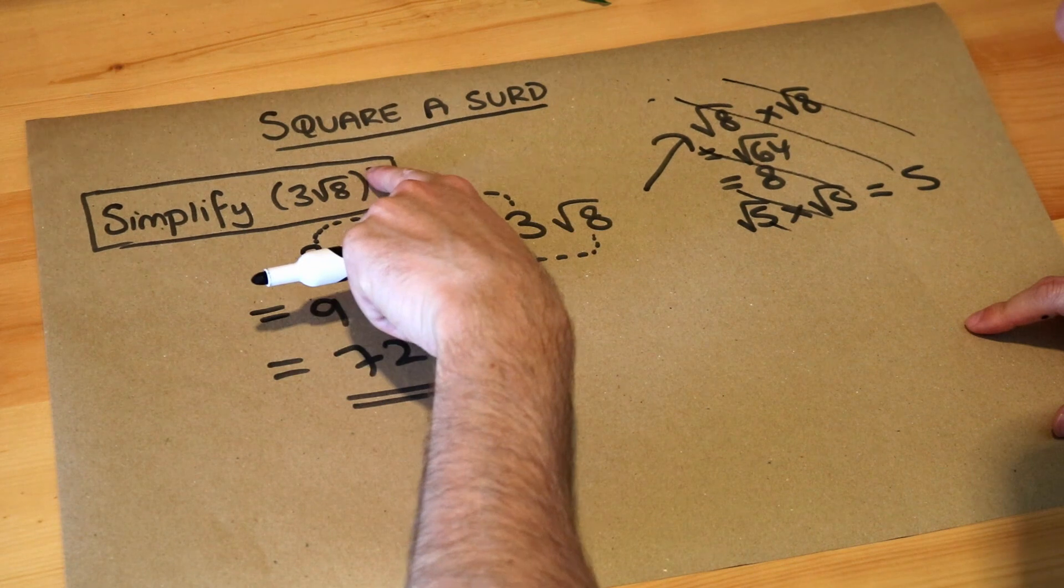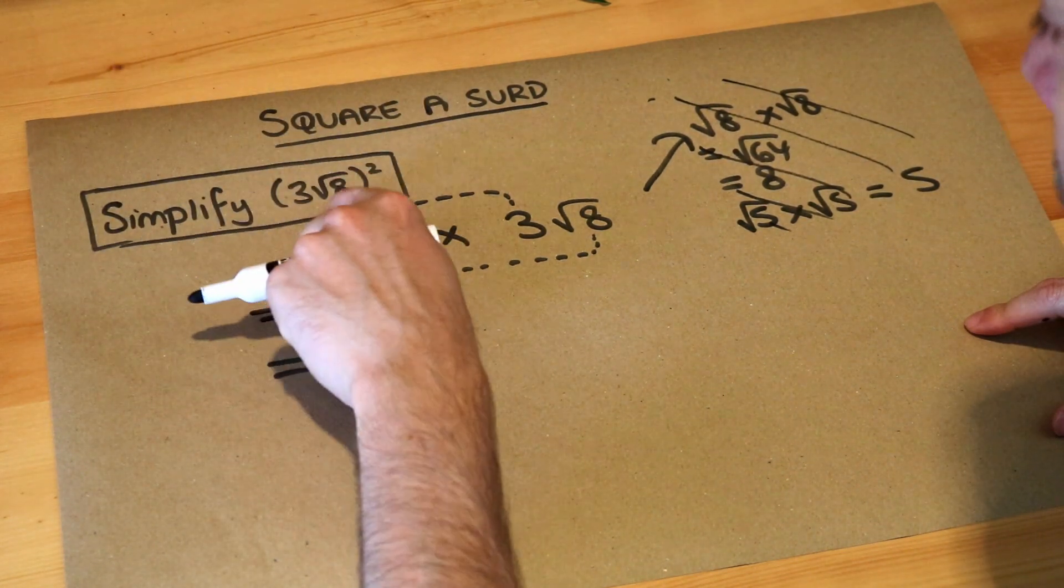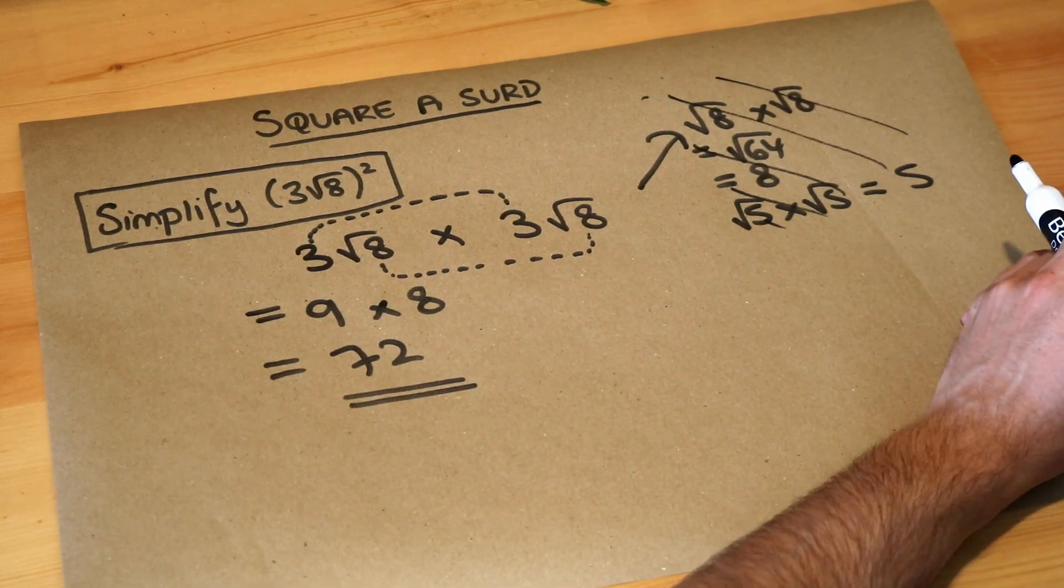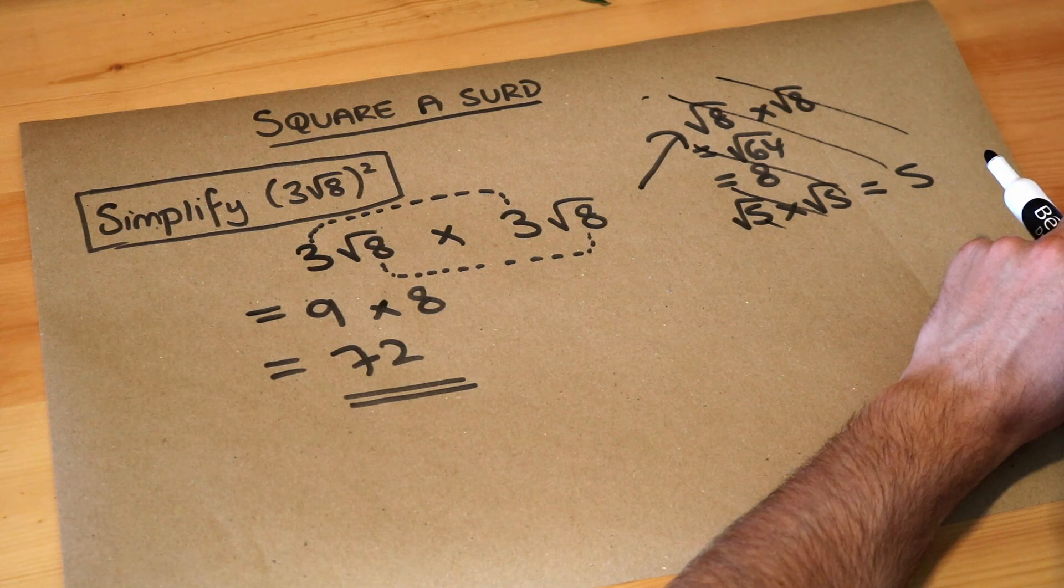So your final answer when you square a surd like this, a single term like 3 root 8 or 2 root 5 or whatever, you should end up with a whole number. There shouldn't be a square root in your answer. A whole number.